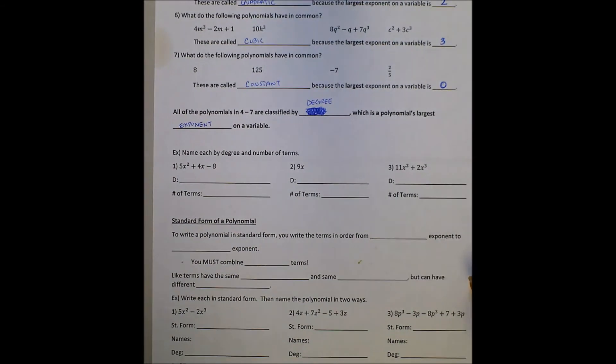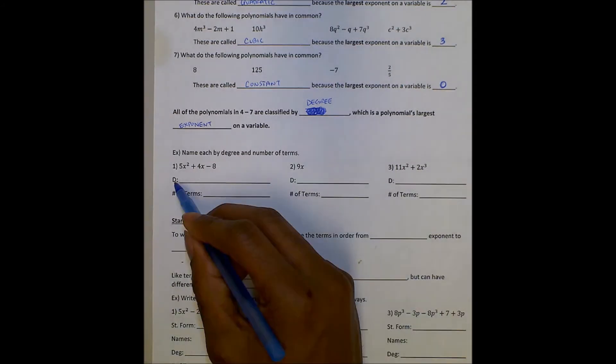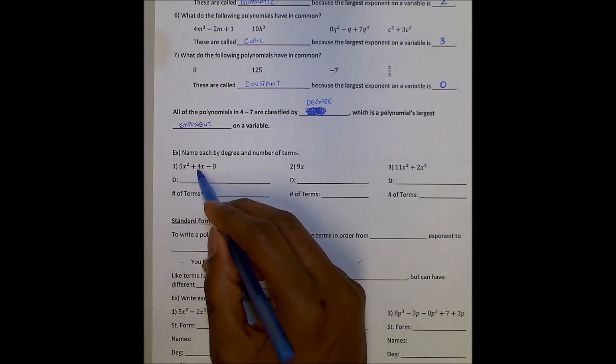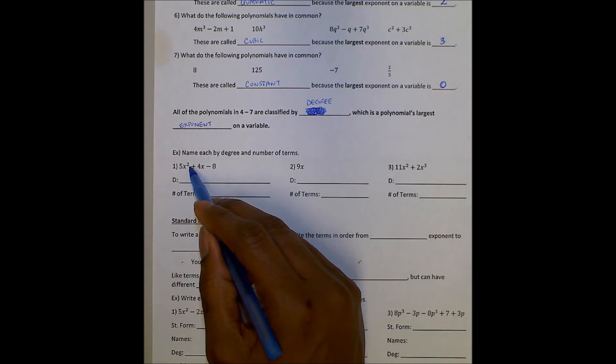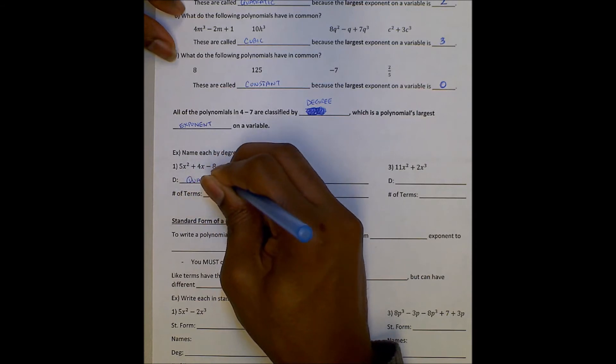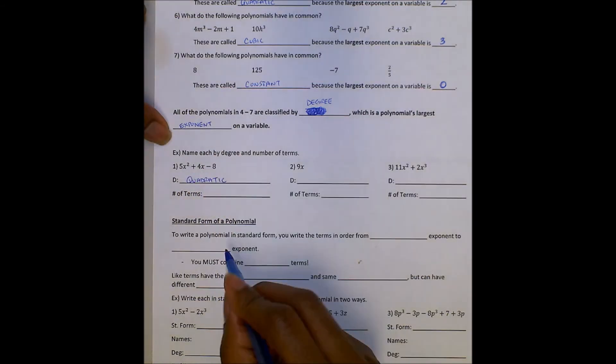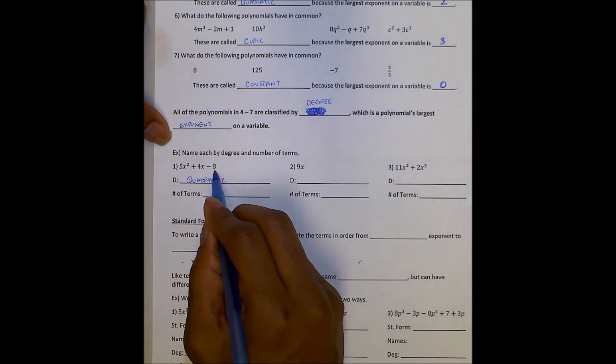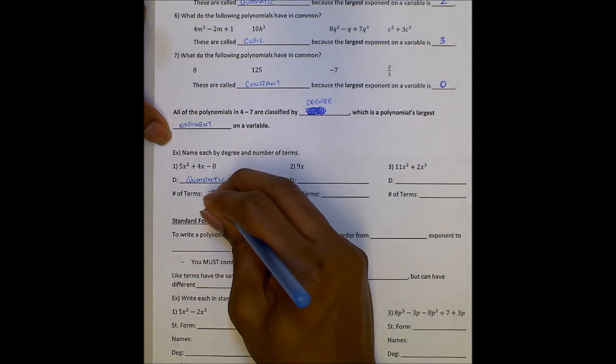Through these next classifying, we're going to name these by degree and by number of terms. So this first one, we're going to name it based off a degree. We look over and say, okay, what's the largest exponent by a variable? It's 2. Since that's the largest one, we call it a quadratic. And then the number of terms, there's 1, 2, 3 terms. So a quadratic trinomial.